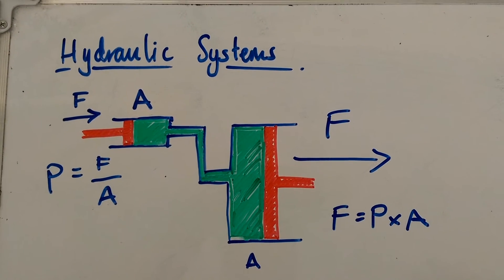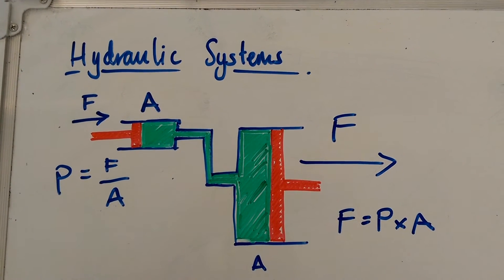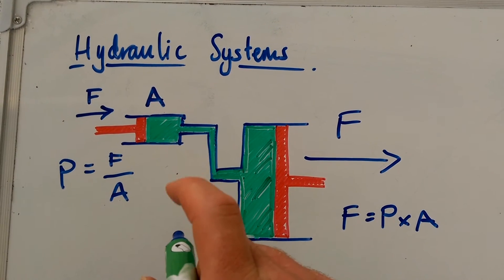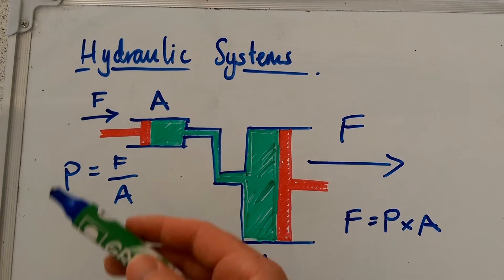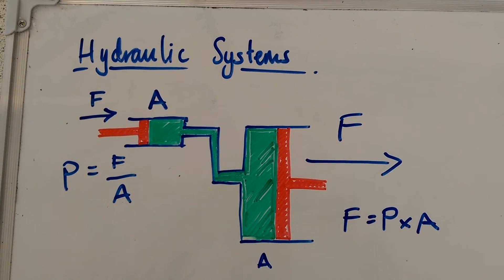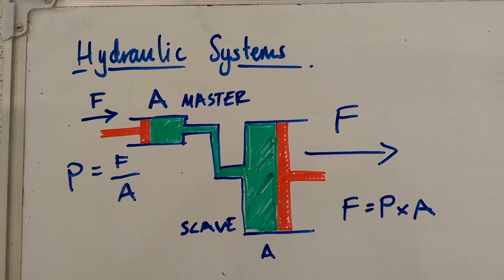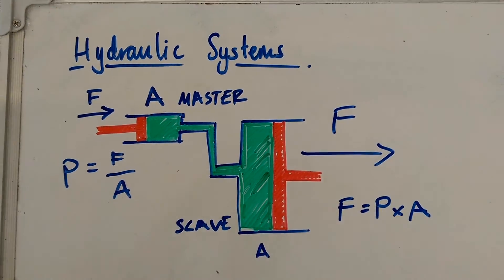A good example of a use of one of these is a braking system for a vehicle or a heavy mountain bike. And the reason we use these is because we can use small forces, from our index fingers in mountain bikes or from our feet, to multiply them and get a large force, large enough to stop the vehicle or bike. We call this piston the master piston and we call this piston the slave piston.